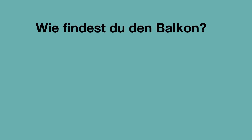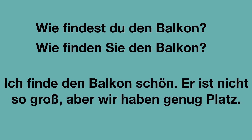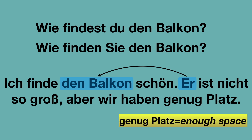Wie findest du den Balkon? How do you find the balcony? Oder in der Sie-Form: Wie finden Sie den Balkon? Und die Antwort, zum Beispiel: Ich finde den Balkon schön. Er ist nicht so groß, aber wir haben genug Platz. 'Er' refers to Balkon — Balkon is masculine, 'der Balkon', that's why the correct pronoun is 'er'. Here you see 'den Balkon' because it's in the accusative. The whole thing translates to: I find the balcony beautiful. He is not so big, but we have enough space. Genug Platz means enough space.